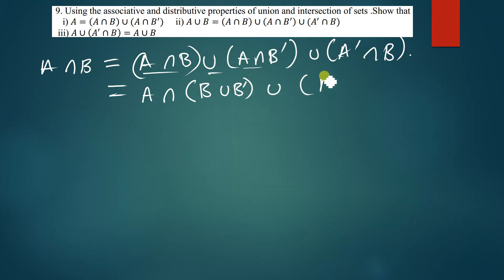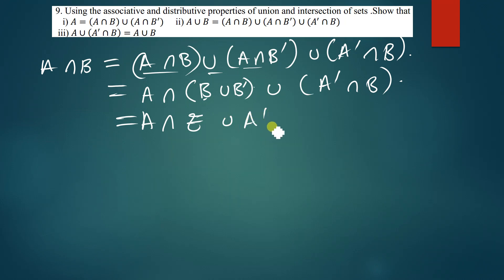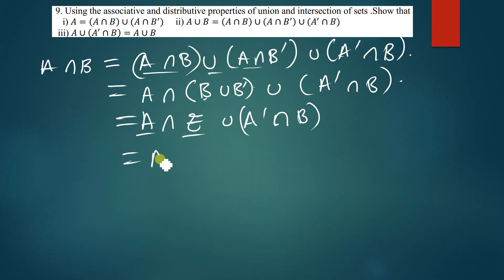Inside the brackets I write the remaining parts: B ∪ B'. I still have another set remaining, which is A'∩B. So we have A∩(B ∪ B') and then A'∩B. Since B ∪ B' equals the universal set, A∩(universal set) gives us A.